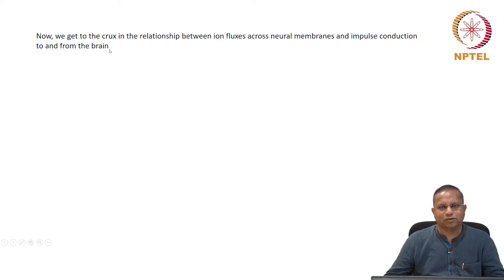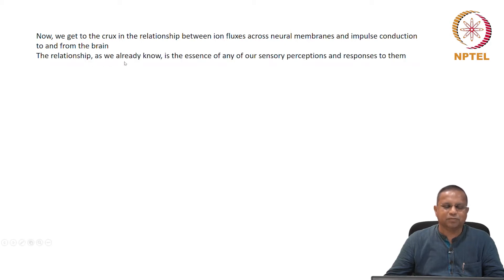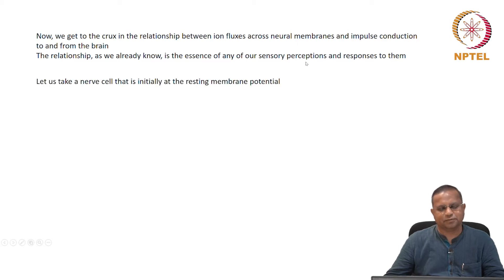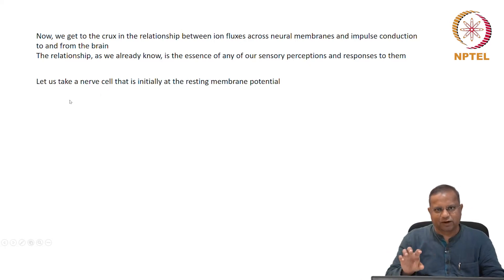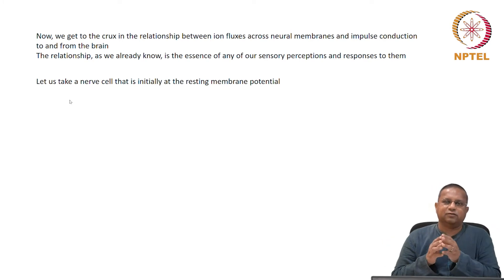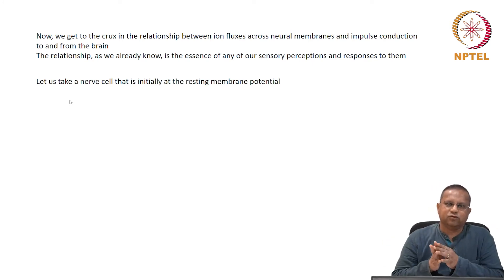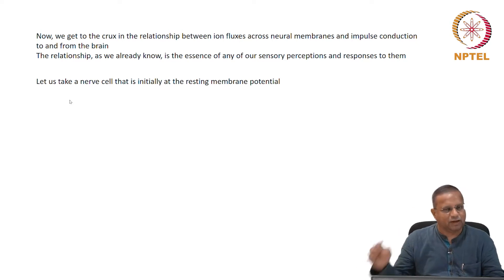I hope you saw the video whose link was given in one of the previous videos. The relationship between ion fluxes and impulse conduction is the essence of any of our sensory perceptions and our responses to them. Let us take a nerve cell that is initially at the resting membrane potential — for our understanding, let us say we are taking a nerve cell and assume it is at resting membrane potential when we start our analysis.